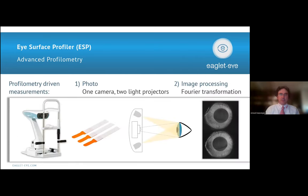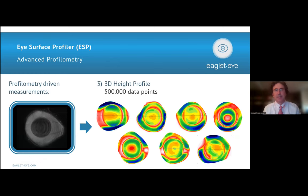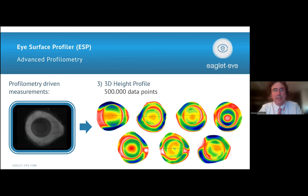The technology is called profilometry. The secret sauce is fluorescein instilled on the tear film. The device projects from two sides a vertical line pattern on the eye in milliseconds, and those photos are processed into 3D height data. You can see a number of maps that come out of a measurement of an eye, letting you see the exact shape of the cornea but also of the sclera.